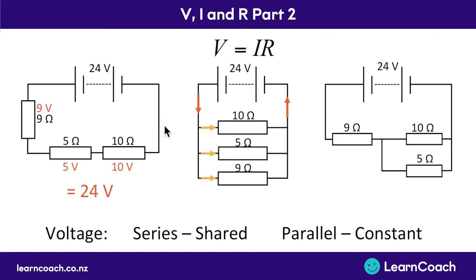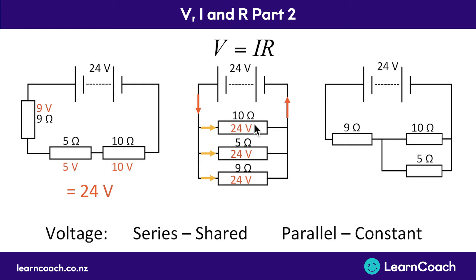In a parallel circuit, the current comes down and splits into three different branches before joining together and continuing around to the battery. Here we have the full 24 volts given to the 10 ohm resistor, the full 24 volts given to the 5 ohm resistor, and the full 24 volts given to the 9 ohm resistor. The voltages are the same in all of these parallel branches.